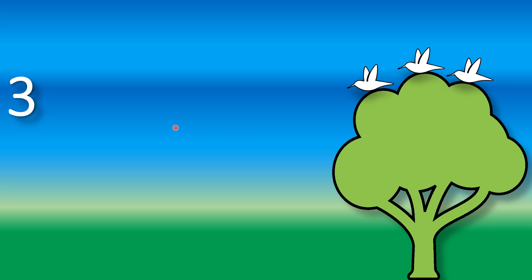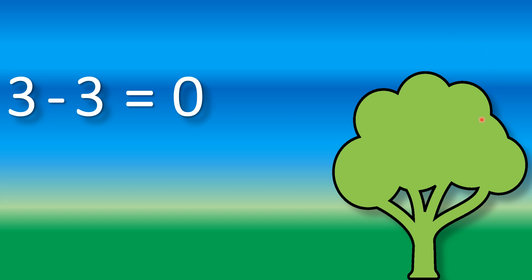Look. There are 3 pigeons. 1, 2, 3. 3 pigeons. So we will write 3, minus 3. Minus 3 means 3 pigeons fly away. Let's see. 1 fly away, 2 fly away, 3 fly away. How many pigeons are left? No pigeons — means 0. So equals to 0. 3 minus 3 equals to 0.